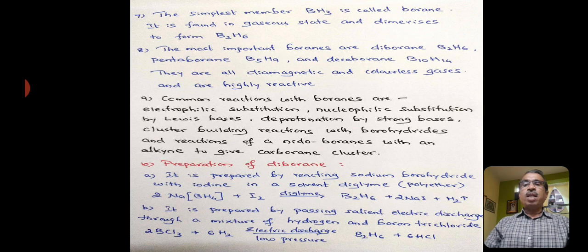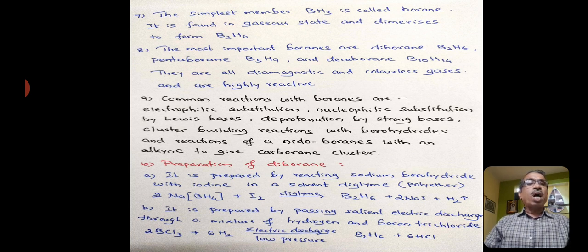The simplest member BH3 is called borane. It is found in gaseous state and dimerizes to form B2H6. The most important boranes are diborane B2H6, pentaborane B5H9, and decaborane B10H14. They are all diamagnetic and colorless gases and are highly reactive.